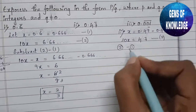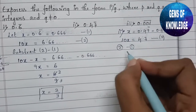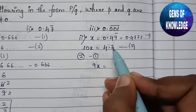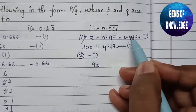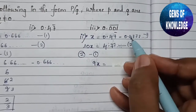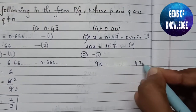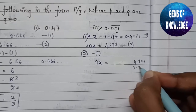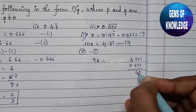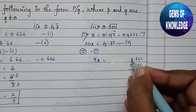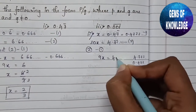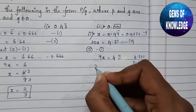Now subtract equation 2 minus equation 1: 10x minus x gives 9x, which equals 4.7777... minus 0.47777... Subtracting: 7 minus 7 is 0, 7 minus 7 is 0, the repeating 7s cancel, then 7 minus 4 is 3, the decimal point stays, and 4 minus 0 is 4. So the result is 4.3, giving us 9x equals 4.3.